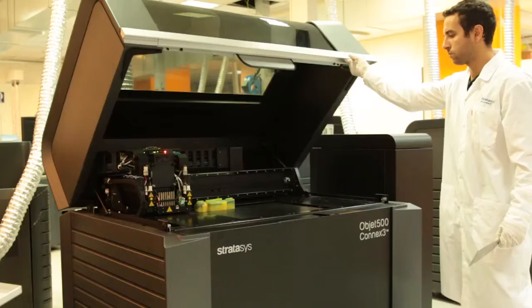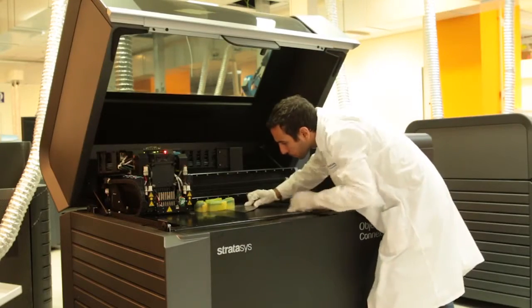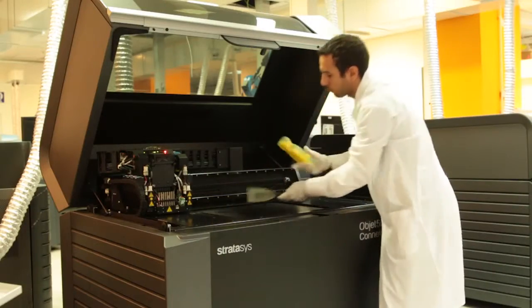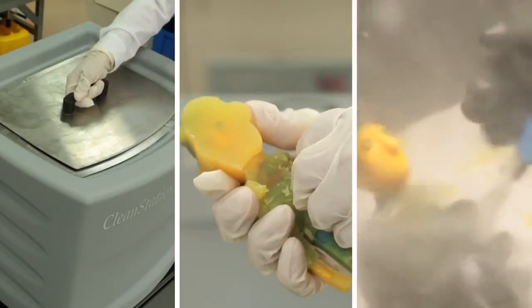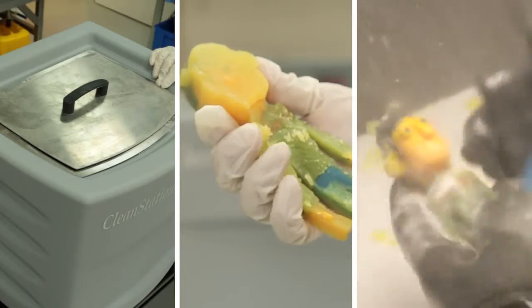Once the parts have been printed using SUP706 support material, remove them from the tray. Three different methods are available to remove SUP706 support material.